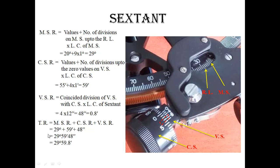The total reading is the main scale reading plus the circular scale reading plus the vernier scale reading: 29 degrees, 59 minutes, and 48 seconds. You can also write this as 29 degrees and 59.8 minutes. Thank you.